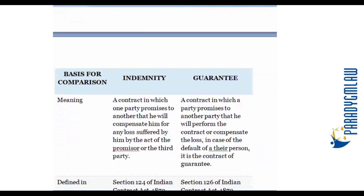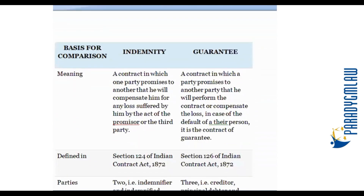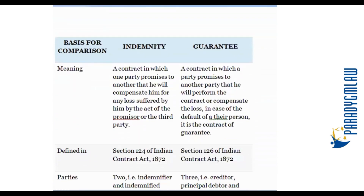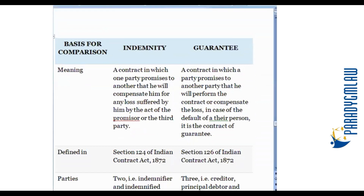The specific types of contracts. Under specific contracts, the first type of contract that is mentioned is a contract of indemnity and guarantee.